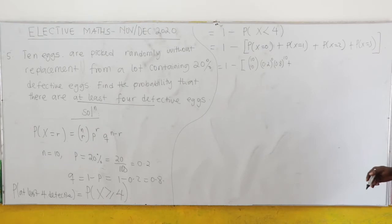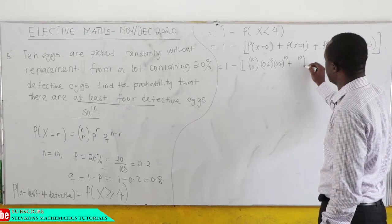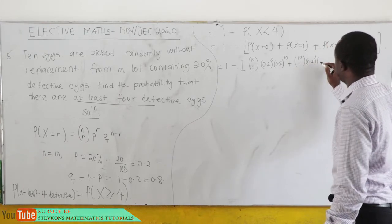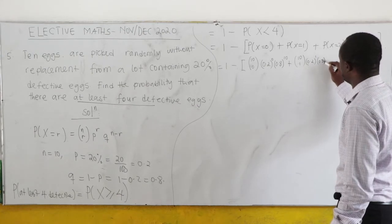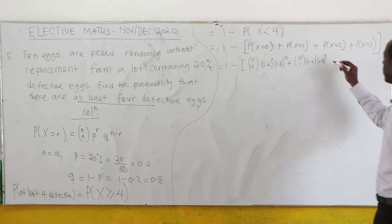Now, when X = 1, here we have 10C1, 0.2^1, and then we have 0.8^9. 10 minus 1 giving us 9.